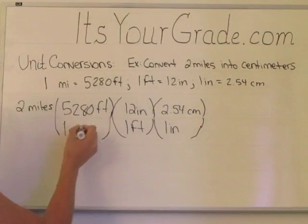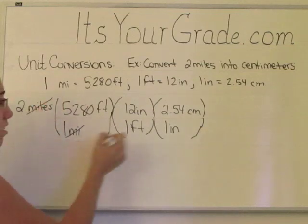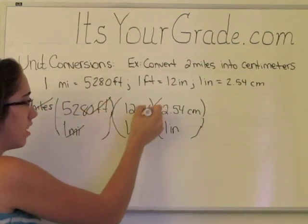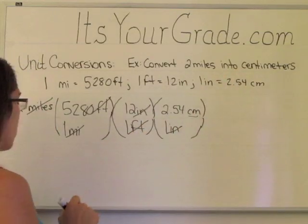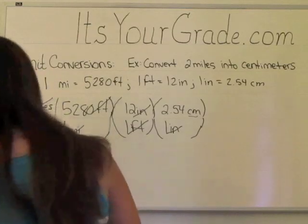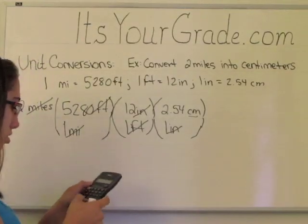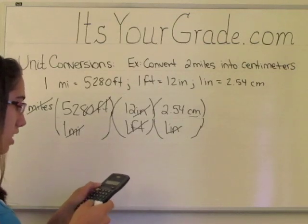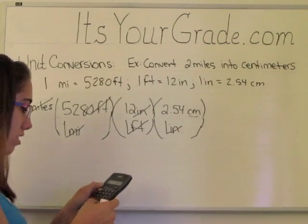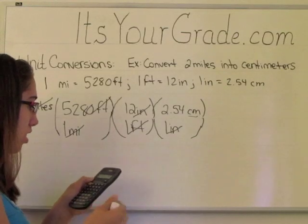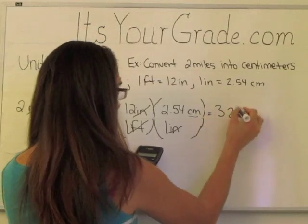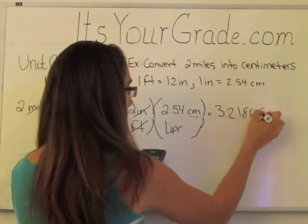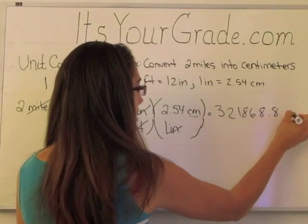So if you look here, this mile will cancel with this mile, the feet will cancel, the inches will cancel, and we're left with centimeters, which is what we wanted to do. So if we plug this into the calculator, 2 times 5,280 times 12 times 2.54, and we get 321,868.8 centimeters.